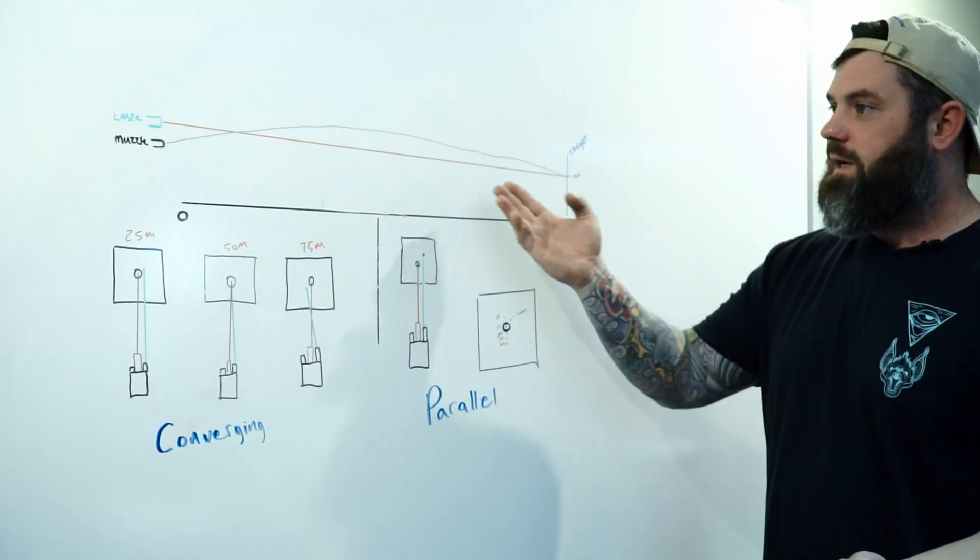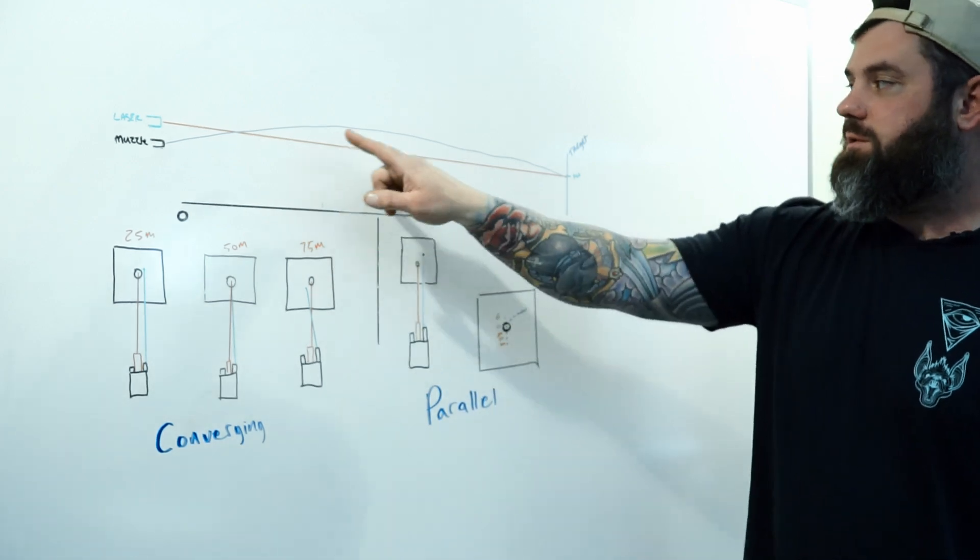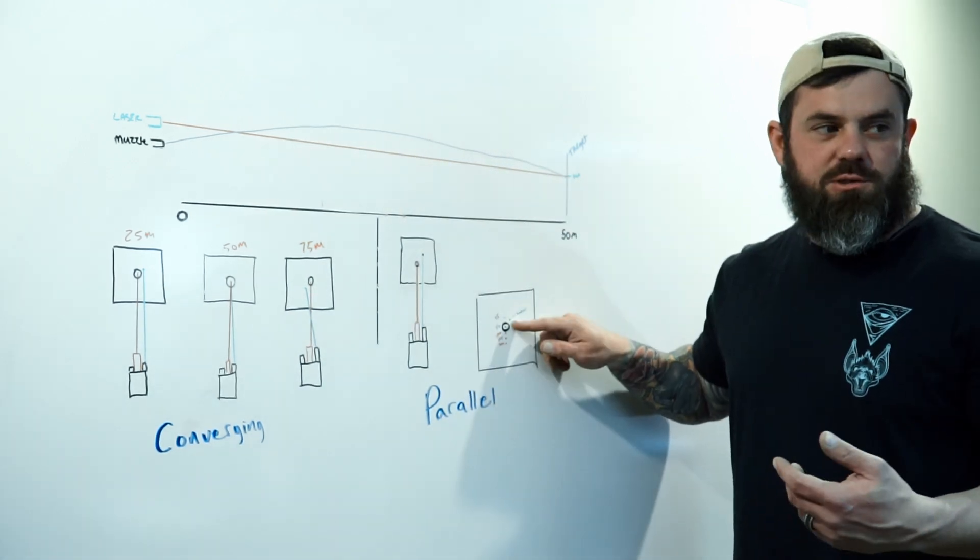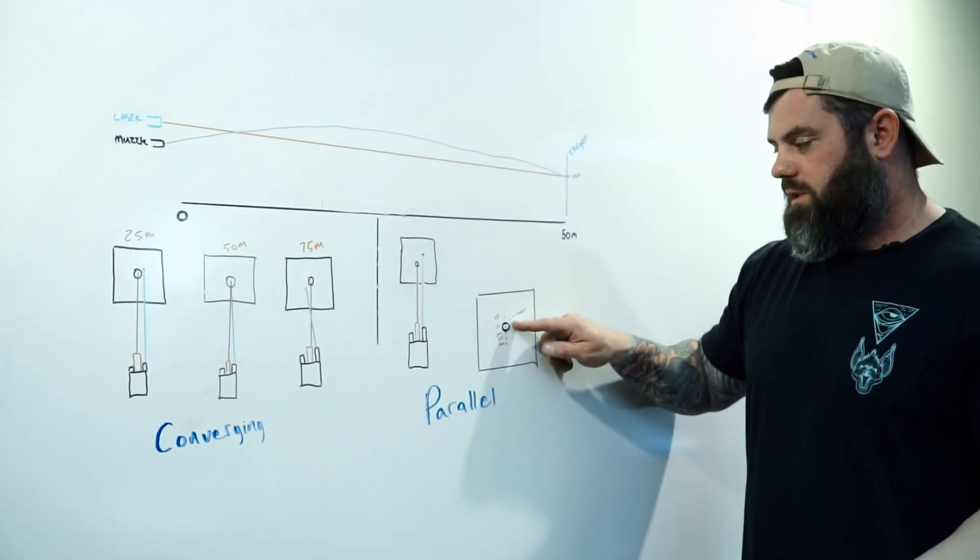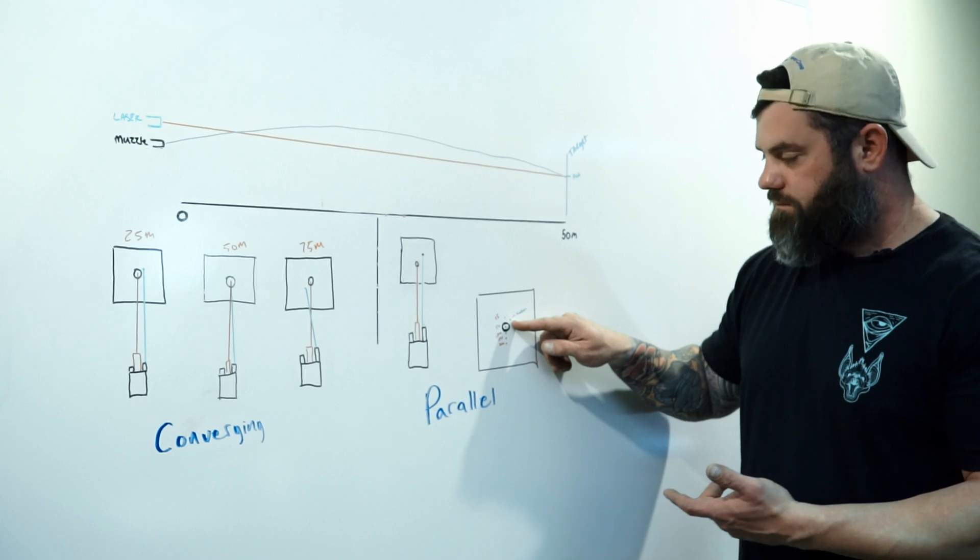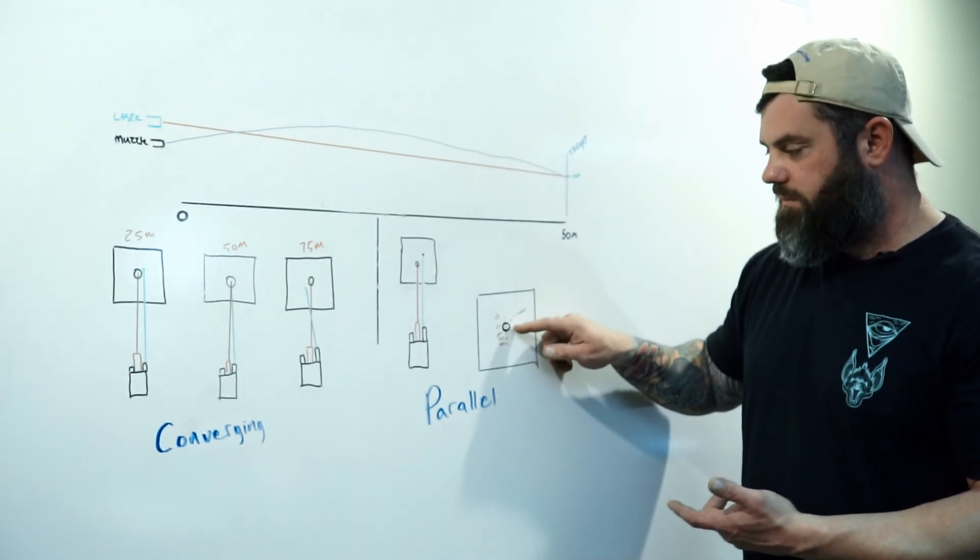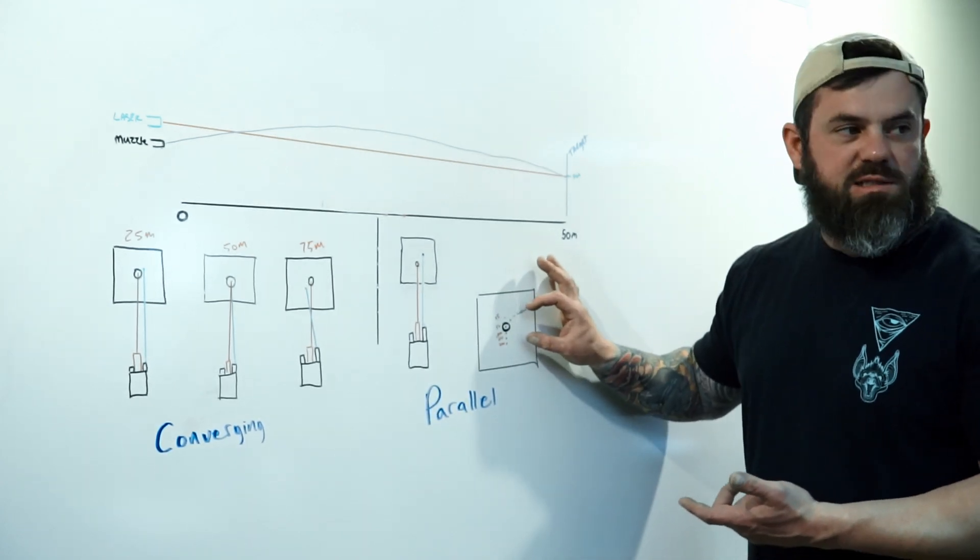As you can see with this diagram here, bullets do not. With respect to taking the ballistics into account, essentially you would hold the same point, 50 meters, 25. You're all going to be in an acceptable window.